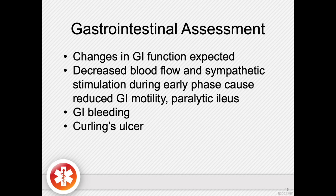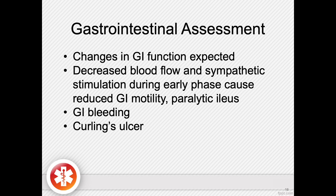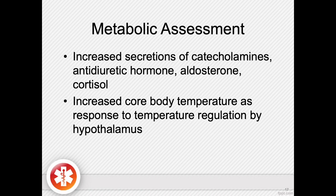The gastrointestinal assessment is also important because changes in GI function are expected. Decreased blood flow and sympathetic stimulation during the early phase cause reduced GI motility and can even cause paralytic ileus. These can lead to complications such as GI bleeding and Curling's ulcer. Remember, these patients need high amounts of nutrition, yet their GI tract has slowed down or even stopped. Appetite suppression also occurs because of changes in their metabolism.